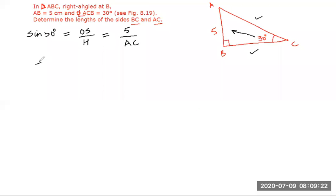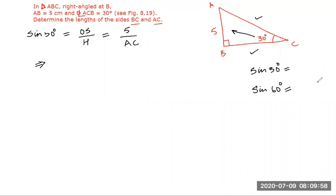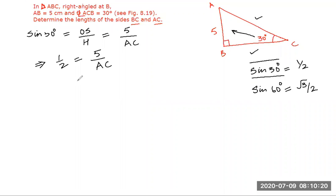We already know the value of sine 30 degrees. I hope you remember — any student? We had derived sine 60 degrees from the equilateral triangle where the perpendicular was √3 by 2, so sine 60 was √3/2. What is sine 30? It's 1/2. Very good. So 1/2 equals 5 by AC. From this, AC equals 5 times 2, that is 10 centimeters.